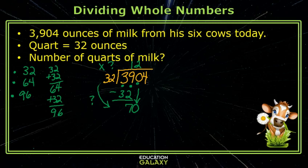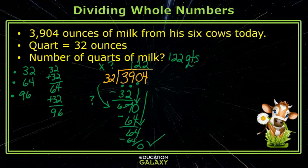Then we multiply, 2 times 32 is 64. We're going to subtract, bring down the next digit. 32 will go into 64 two times. We subtract, and yay! We have a zero remainder.